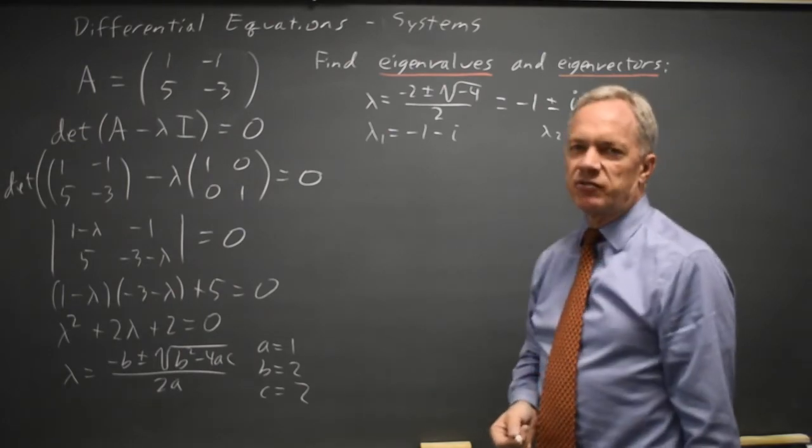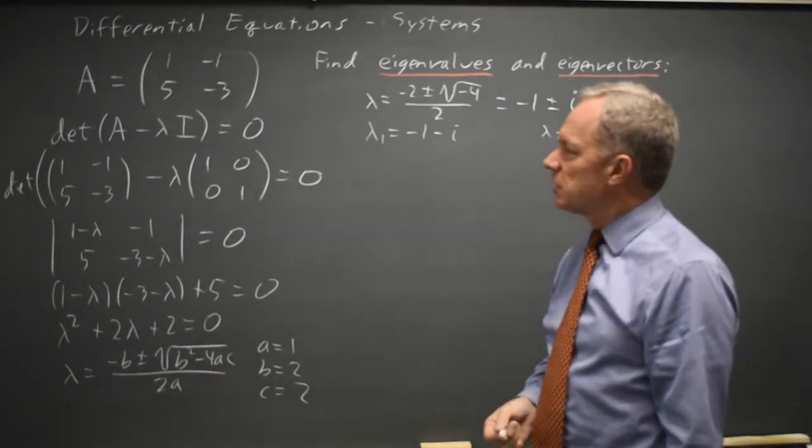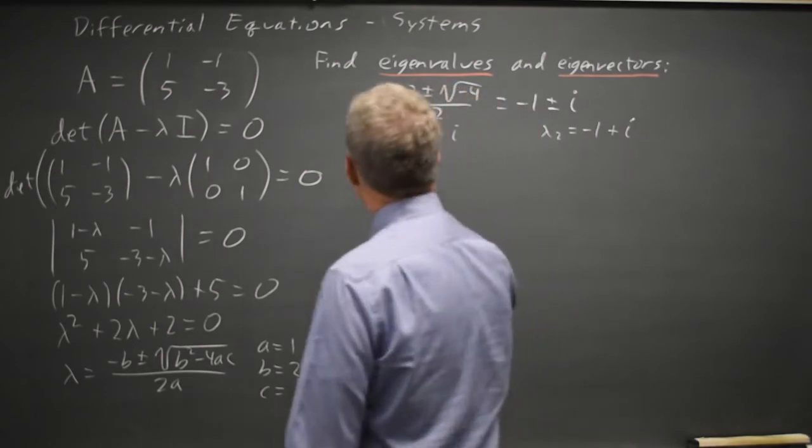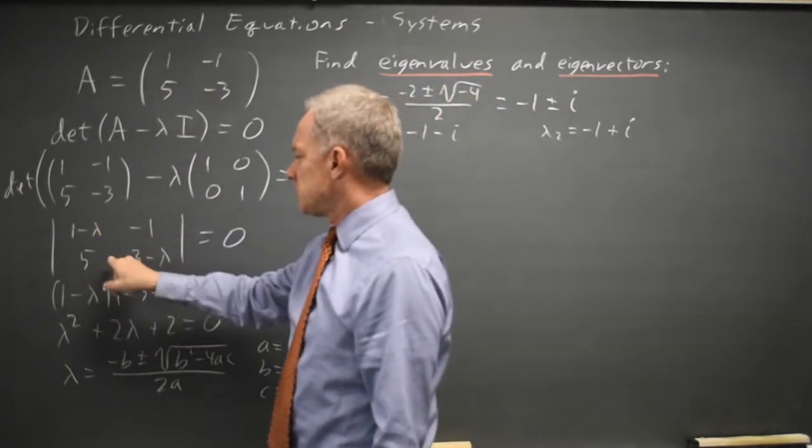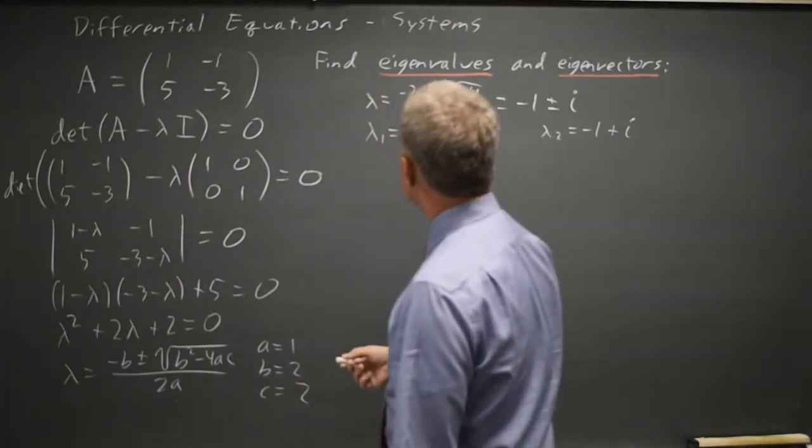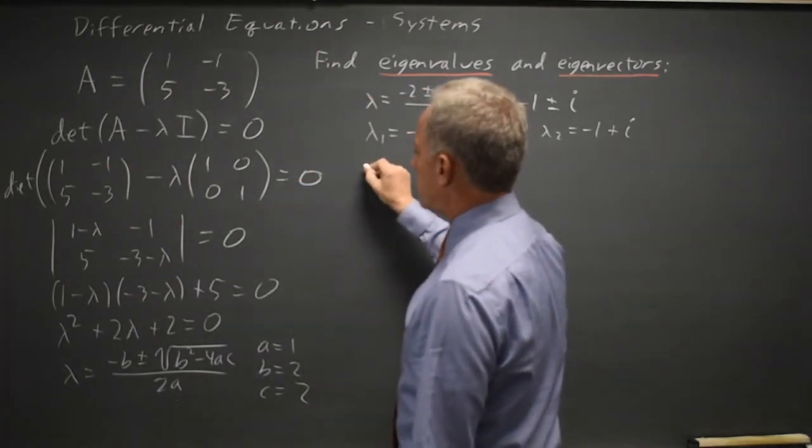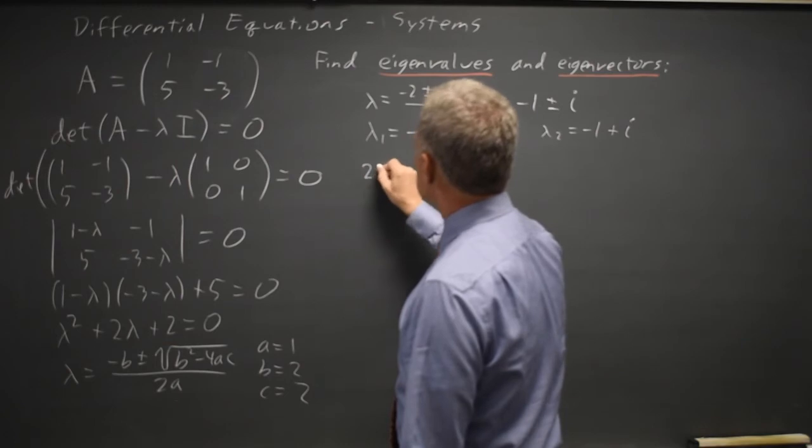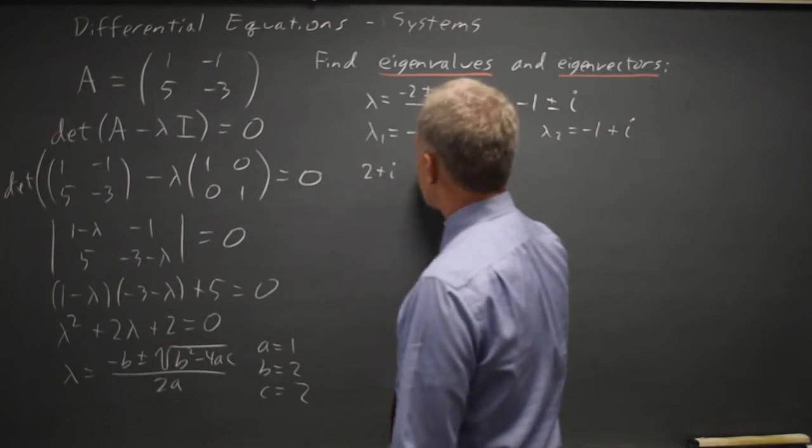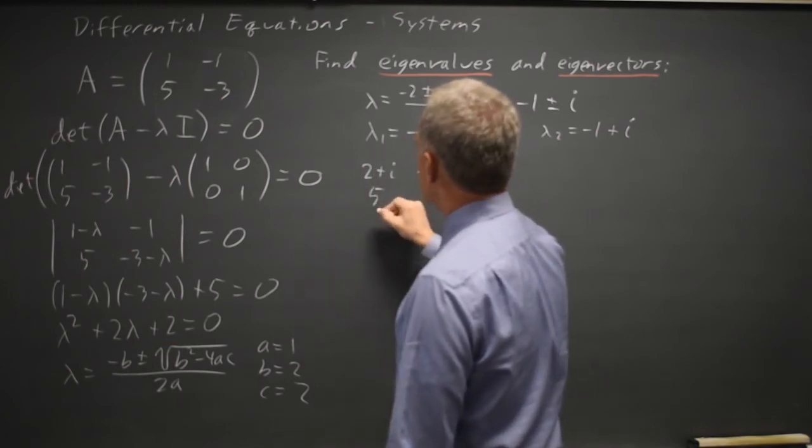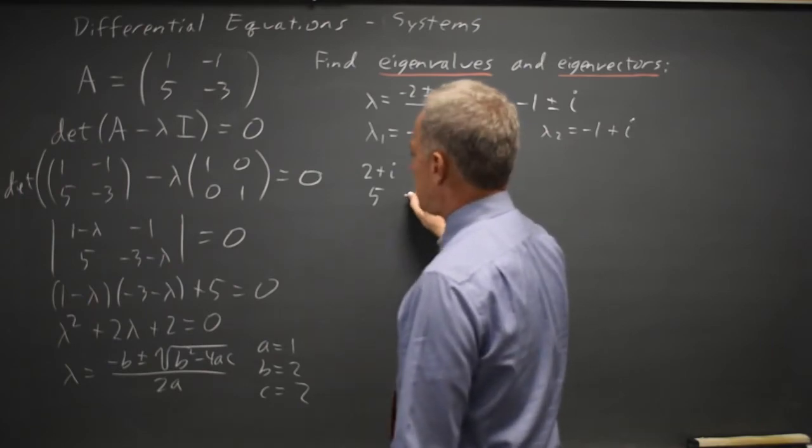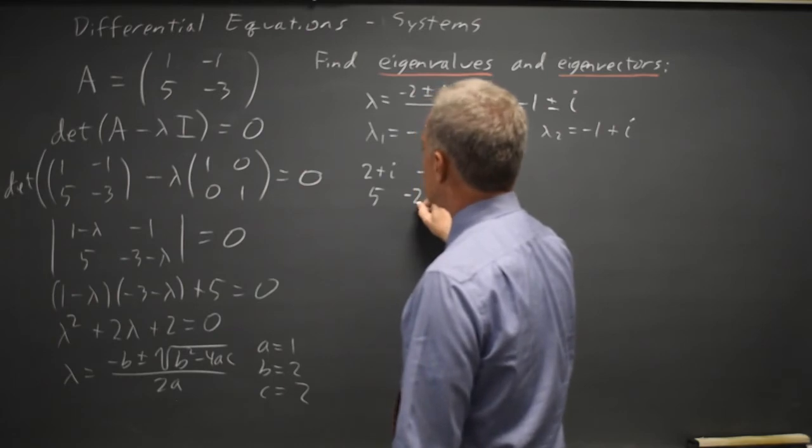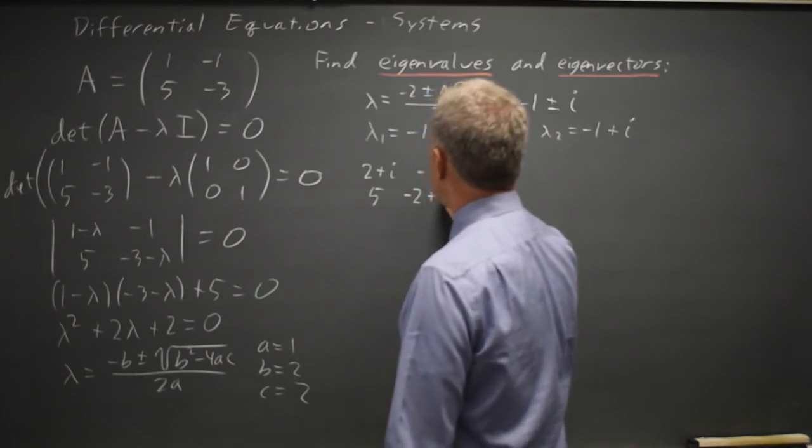Let's find the eigenvectors to those complex eigenvalues. If I take matrix A minus lambda times the identity, which is this as a matrix instead of a determinant, so 1 minus negative 1 would be 2 plus i, negative 1, 5, negative 3 minus negative 1 would be negative 2 plus i.